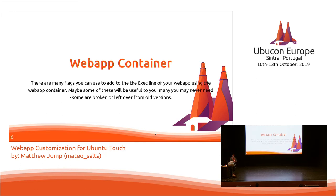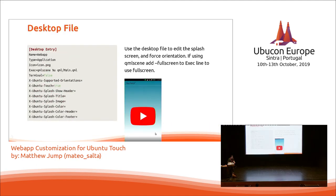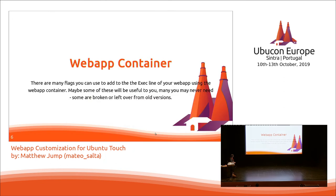On the web app container, in the desktop file, you have the exec line, and this enables you to run many different flags. If you're not familiar with the format, this is a desktop file — it tells what it executes, also the splash screen startup, the icon, and whether you want it locked to an orientation. You can do a lot of things. So, back to the flags.